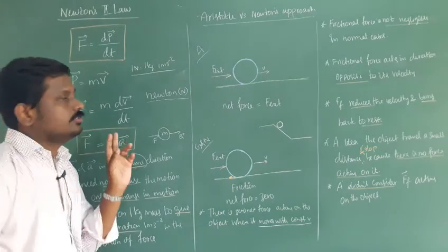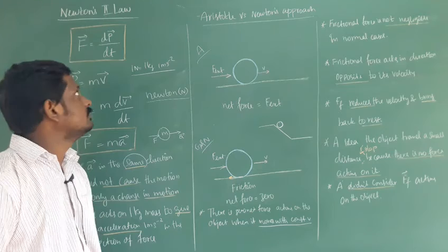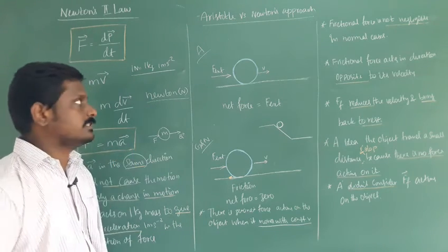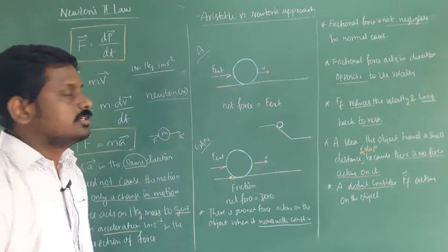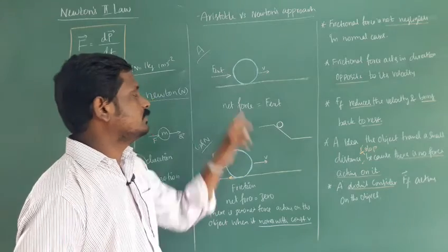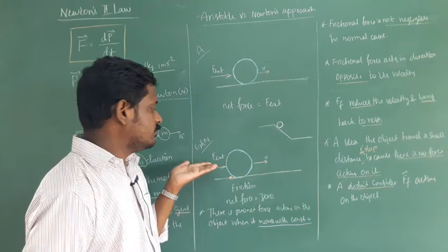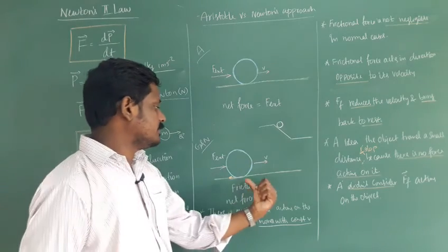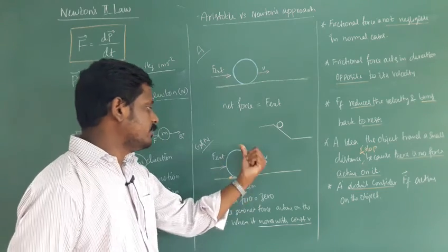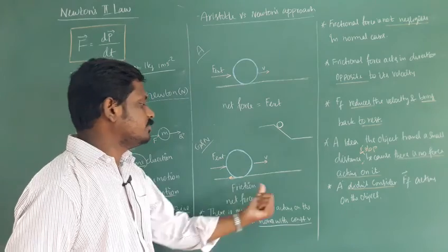In this class we have discussed Newton's second law — that the force acting on an object equals the rate of change of momentum, as well as the product of mass and acceleration. We also compared Aristotle versus Newton's approach: Aristotle required an external force to maintain constant velocity, whereas Galileo and Newton showed that an external force and an opposing frictional force result in zero net force, which stops the object.